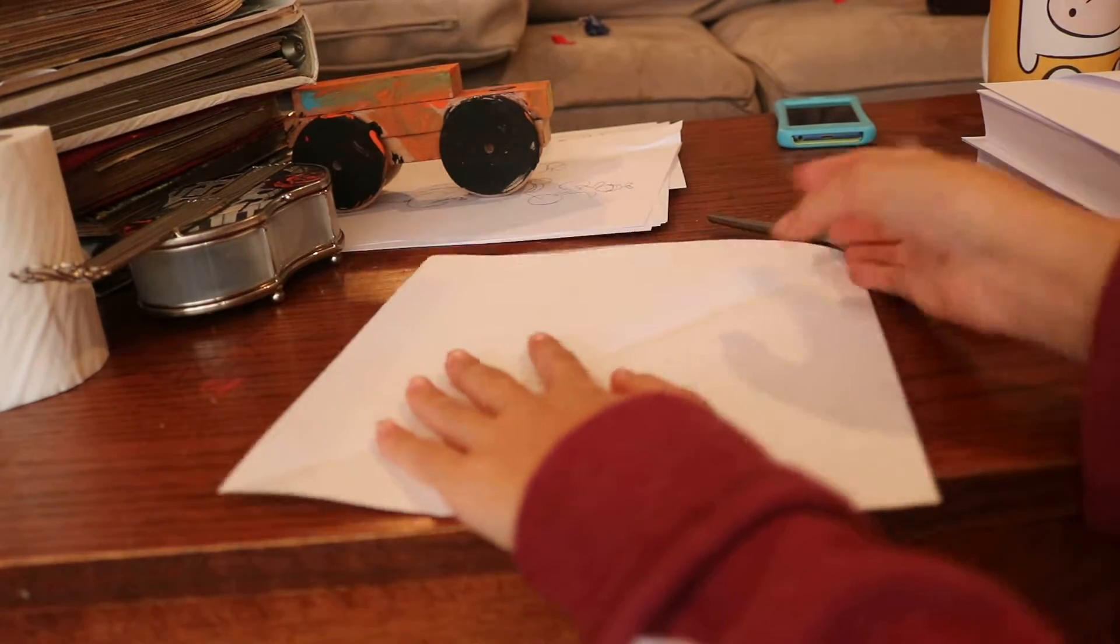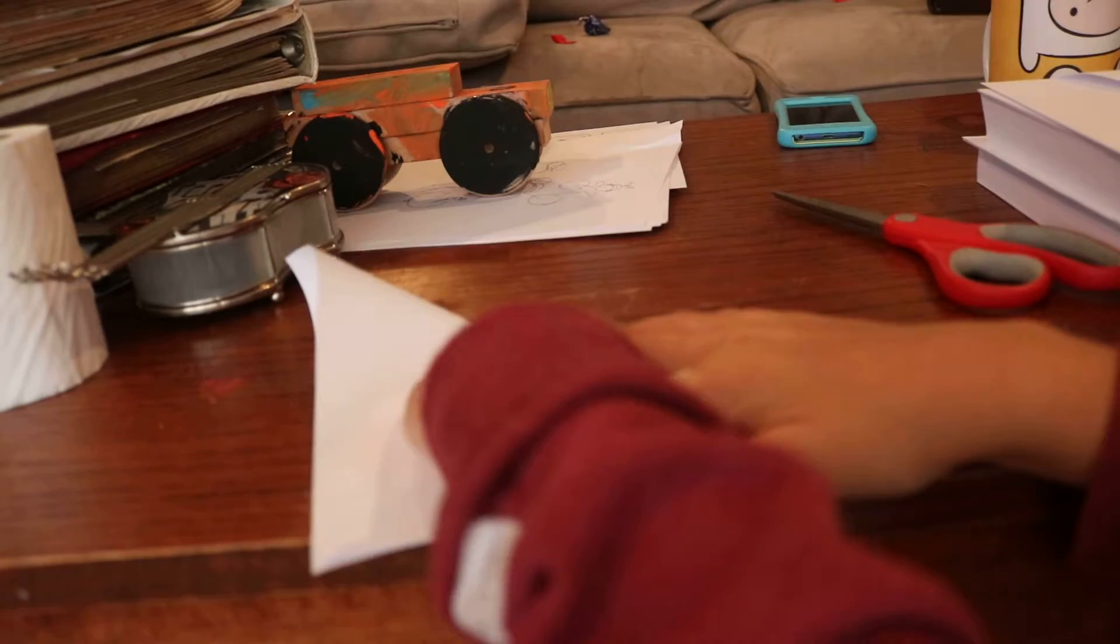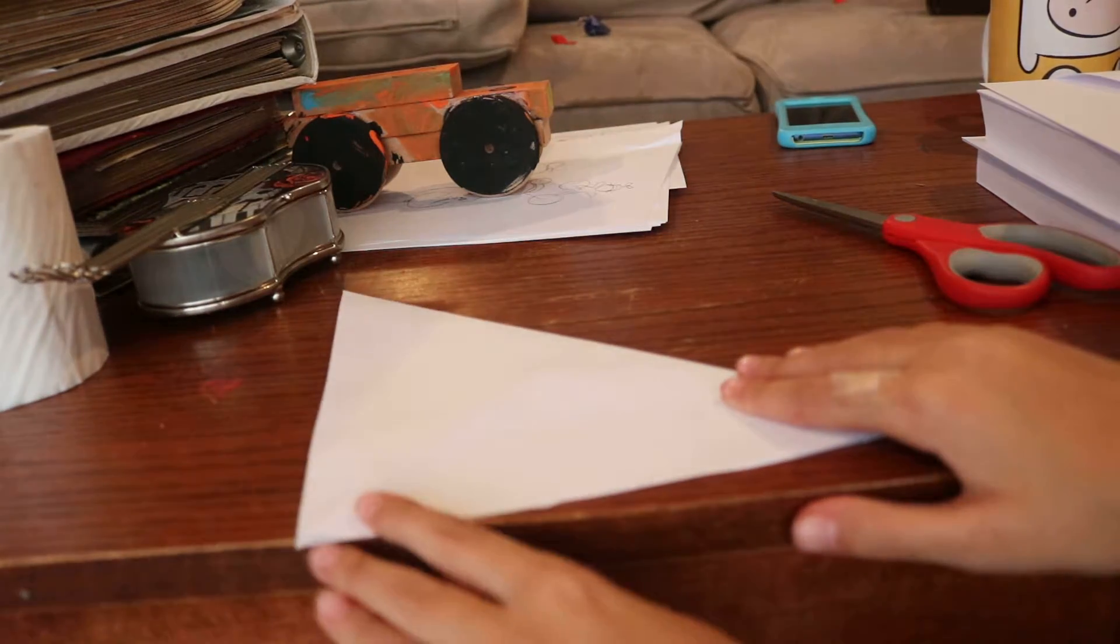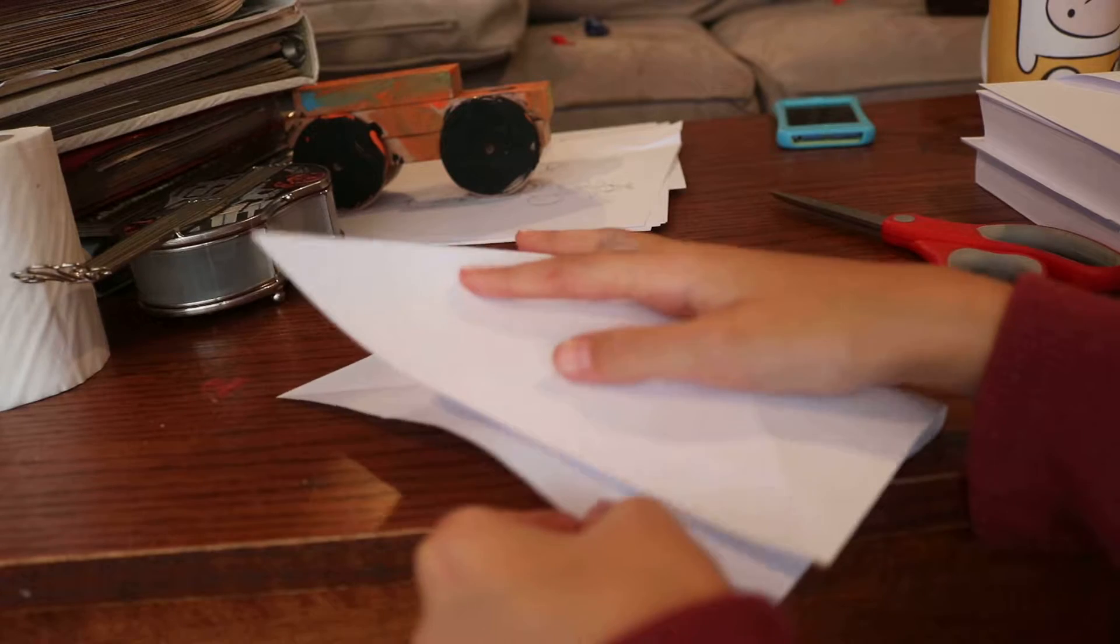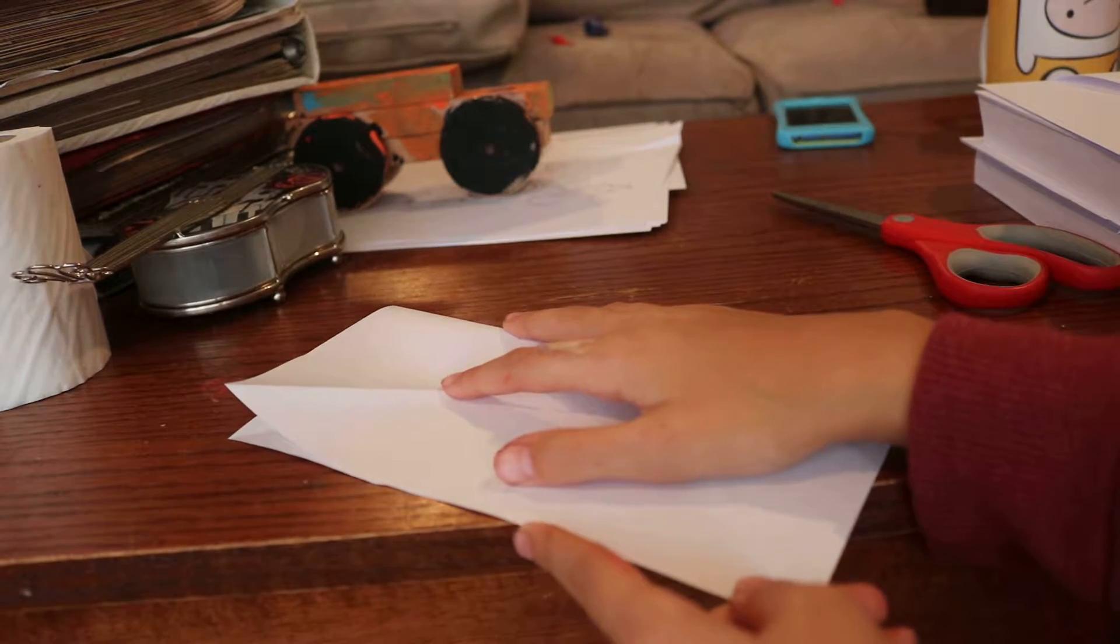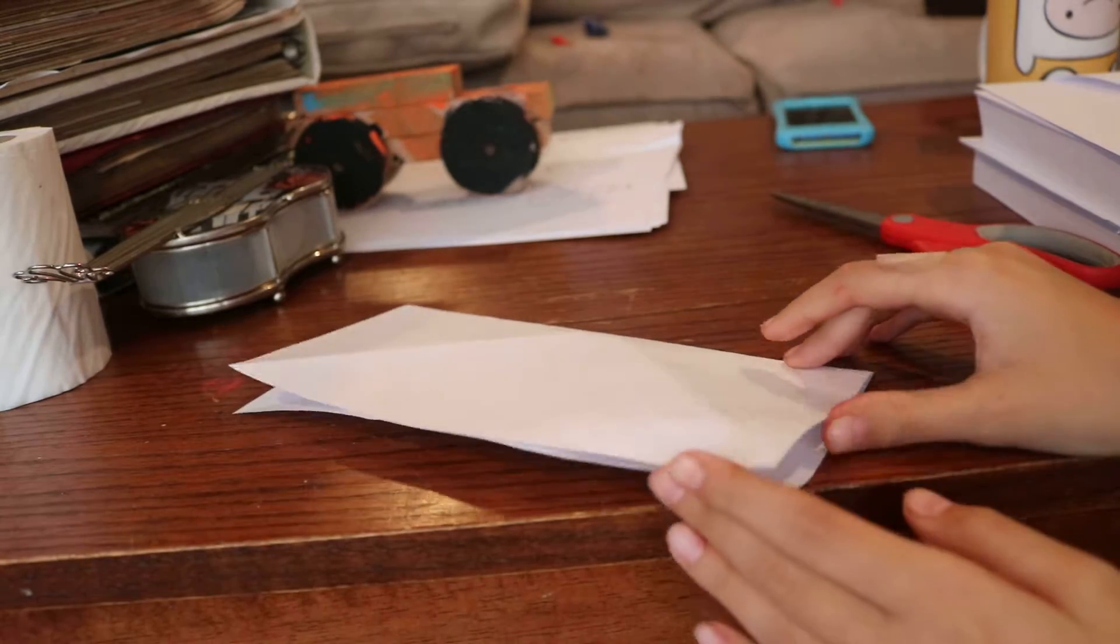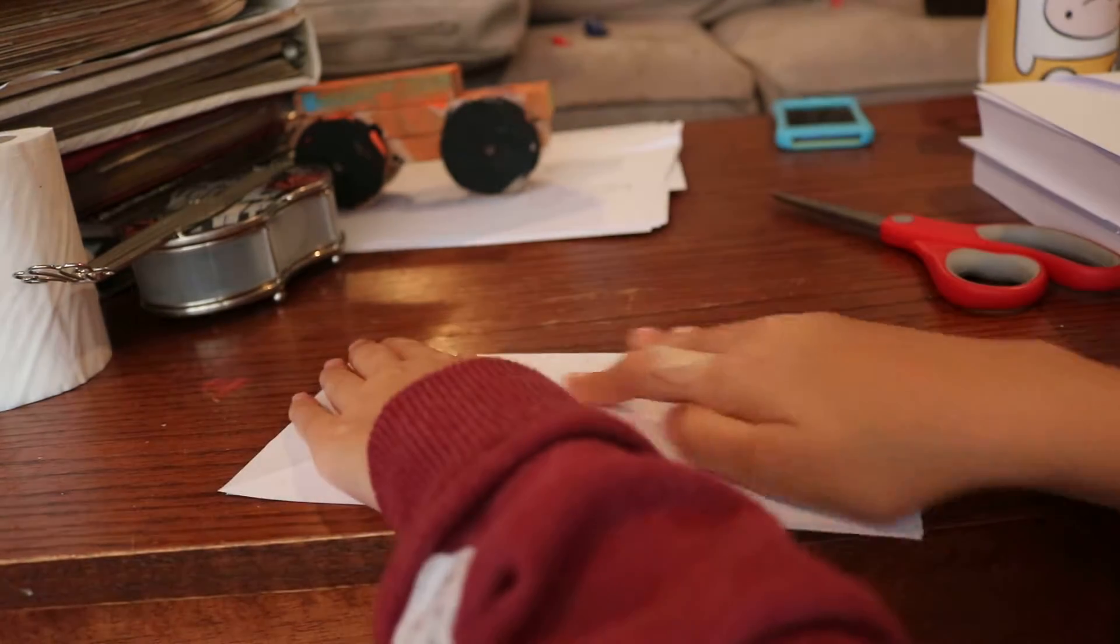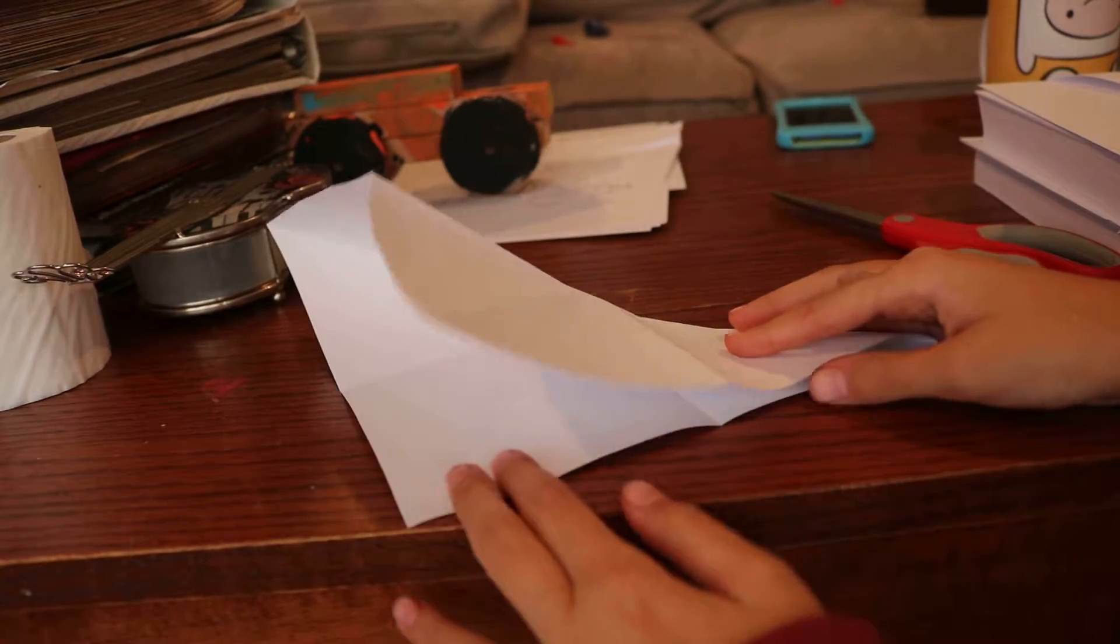The next step, fold it like this. It doesn't have to be perfect but if you want it really perfect that's okay. Once you're done doing that, fold it, unfold it, and that's the last fold. Once it's shaped like a snowflake, you fold it into a triangle.